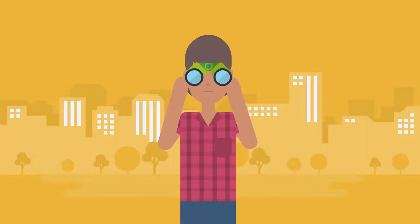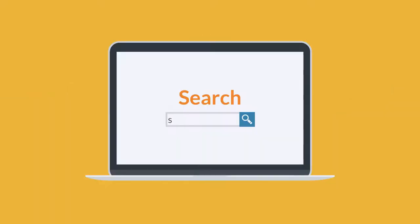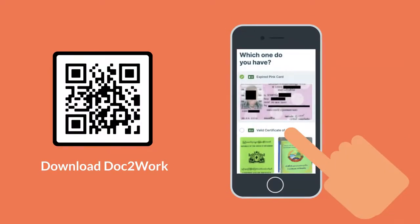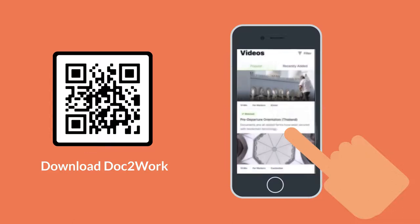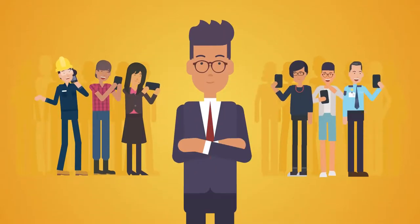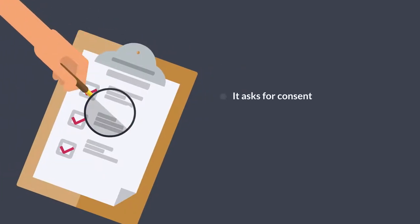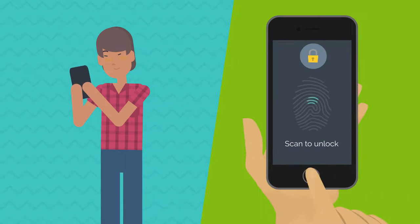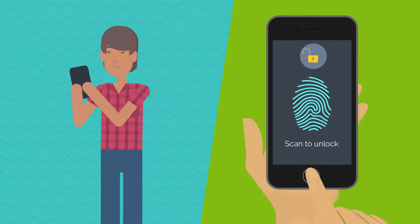To protect against any information breaches, when Zha first arrived in Thailand, he researched all applications he was considering using. For sharing personal papers such as visa, work permits, and contracts, he chose an app called Doc2Work that lets him upload and share digital copies of all documents needed to work and live in Thailand. Zha knows this application is safe because it asks his consent to share any personal data, and if he does not give consent, it will not share this information with anyone. It informs him exactly how his data will be used and who has access to it, and sends him a notification immediately if anyone tries to access his personal information without his permission.